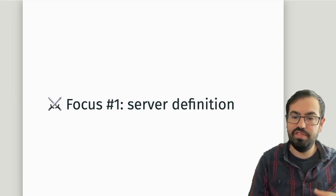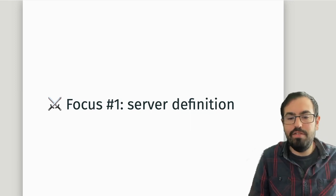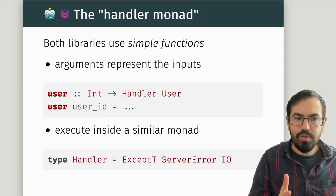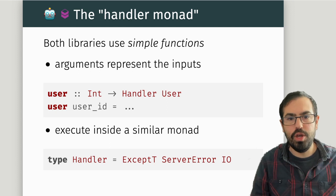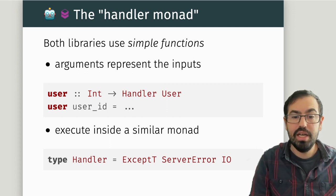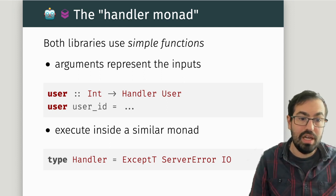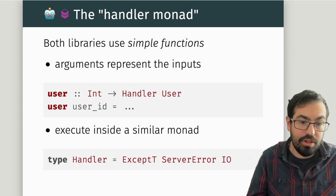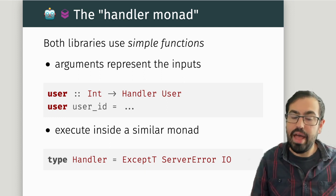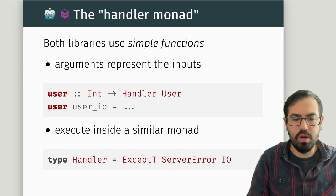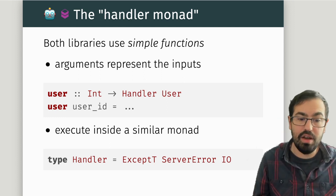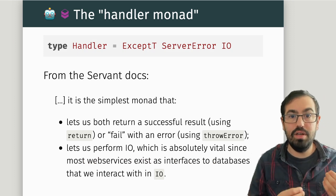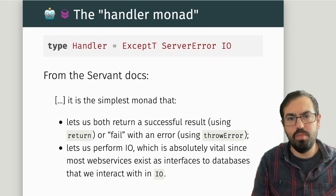Our first focus is how we define the server and handlers — the functionality your server exposes. Both Servant and Mu use the idea of having very simple functions in which arguments represent the input. If the user route had a user ID which is an integer, the handler just has one argument which is an integer. They both execute in a similar monad — essentially ExceptT of some ServerError over IO.